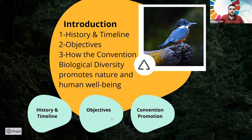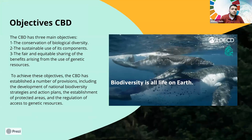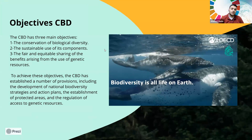The CBD has three main objectives: first, conservation of biological diversity; second, sustainable use of its components; and third, fair and equitable sharing of benefits arising from the use of genetic resources. To achieve these objectives, the CBD has established a number of provisions including the development of national biodiversity strategies and action plans, establishing protected areas, and regulation of access to genetic resources.